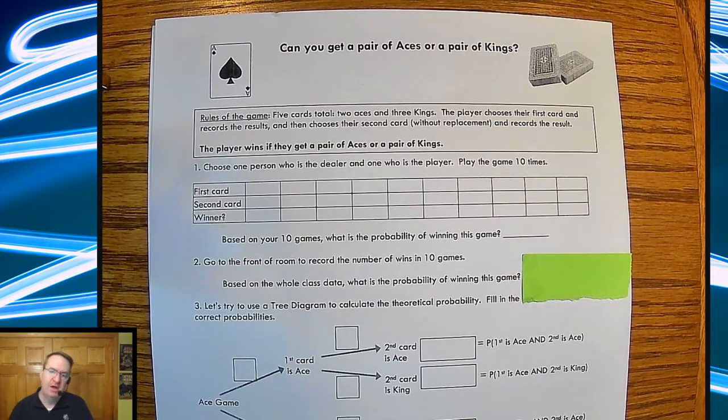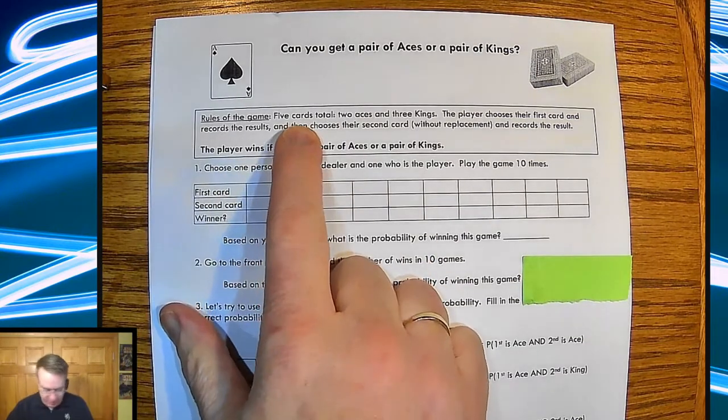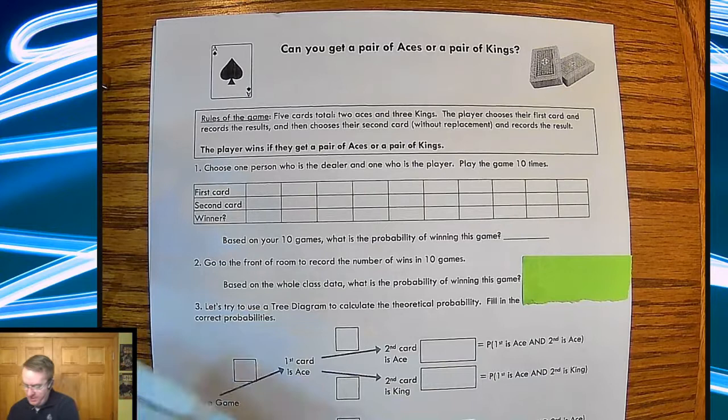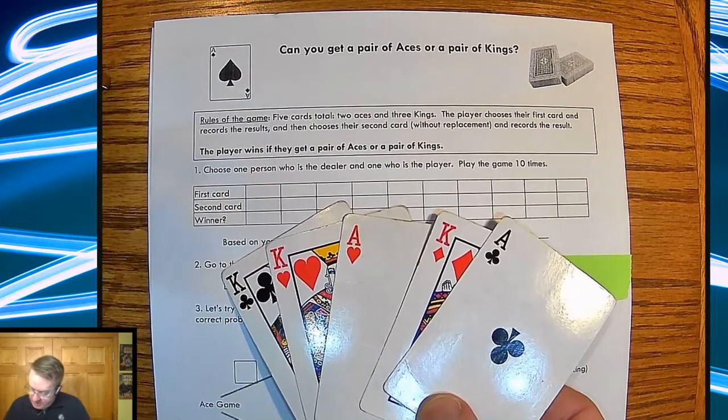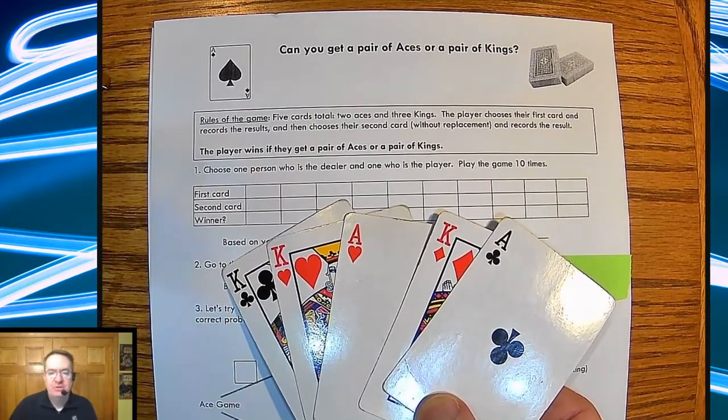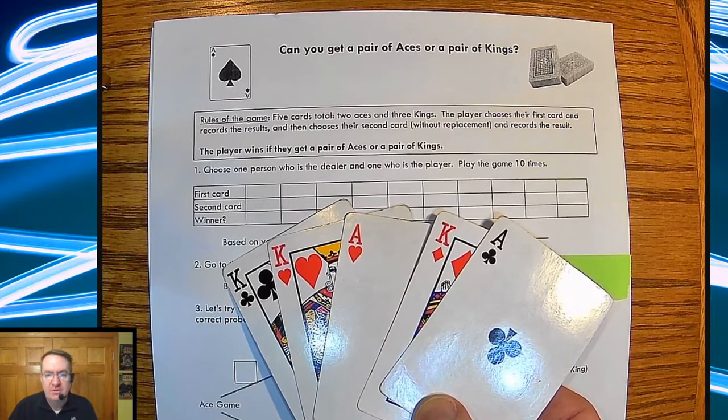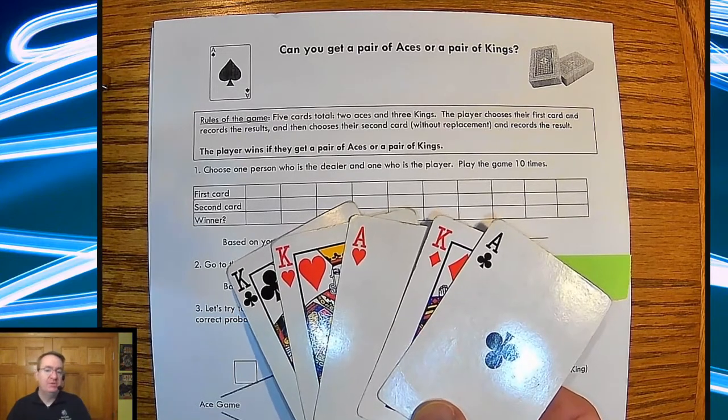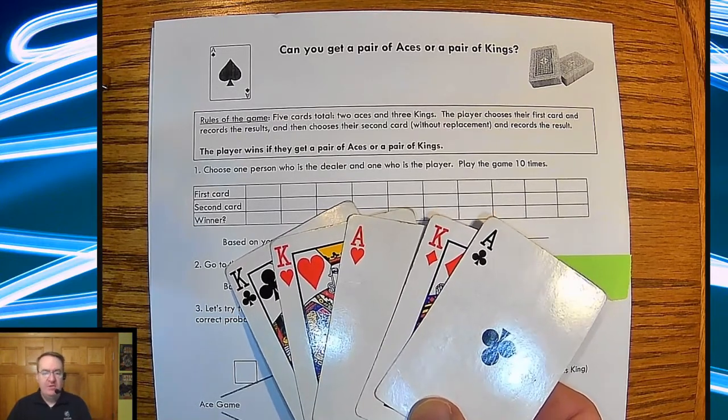Like, subscribe, comment, etc. So the game is this: five cards total, so I've got my five cards right here. There are two aces and three kings. The player chooses the first card and records the results, then they pick the second card without replacing the first one, and you win if you get a pair of aces or a pair of kings.